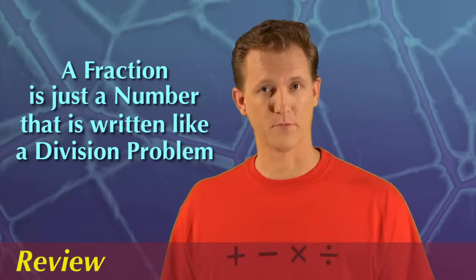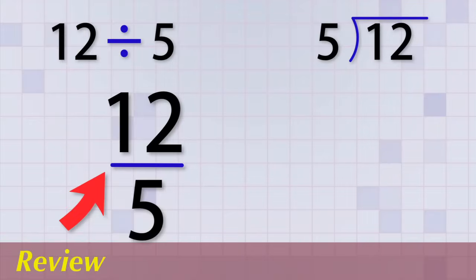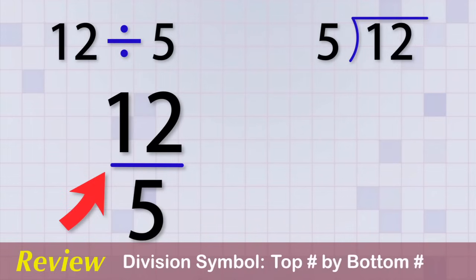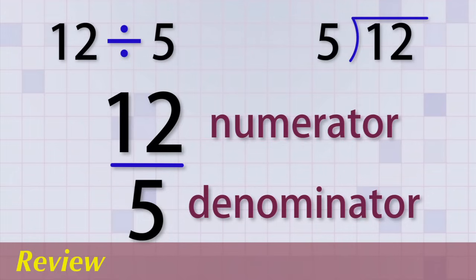Let's review what we've learned so far. This section was short, but in it we learned the most important thing there is to know about fractions. We learned that fractions are numbers that are written like division problems. The line between the top and bottom numbers is another form of the division symbol. That tells you to divide the top number by the bottom number. The top number is called the numerator and the bottom number is called the denominator.